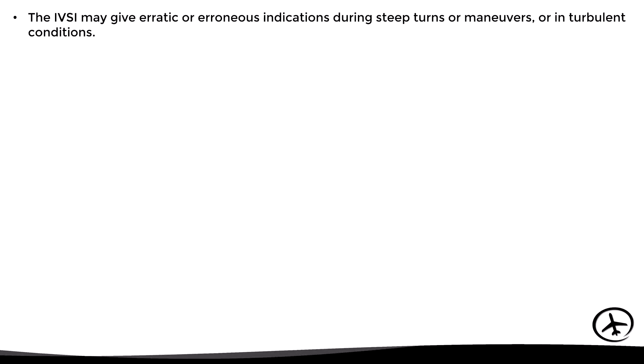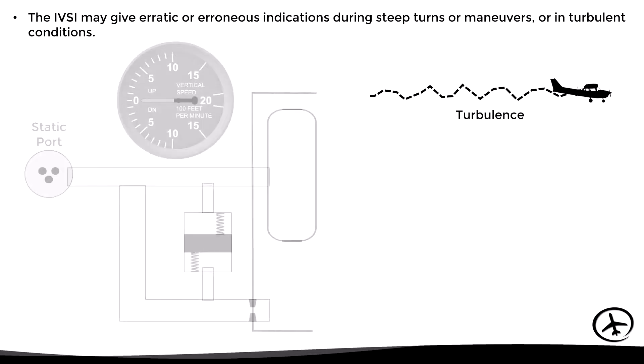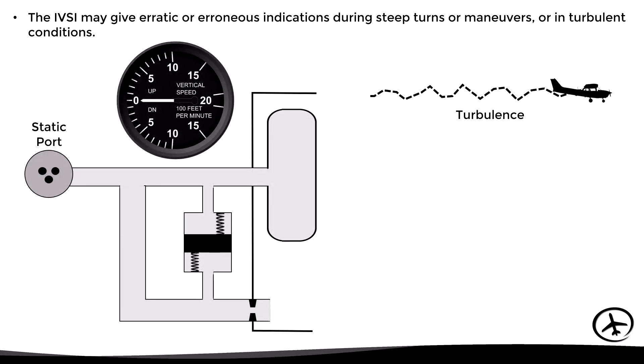However, a problem related to this design is that it may give erratic or erroneous indications during steep turns, maneuvers, or in turbulent conditions. While flying in turbulence, the piston moves constantly up and down, causing the needle to move erratically.